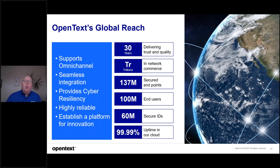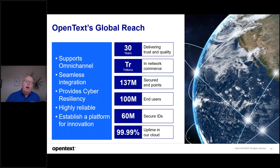For the past 30 years, OpenText has partnered with companies around the goal of helping them grow and execute on their omnichannel journey. We've been delivering trust and quality, and we support omnichannel growth around the globe. Wherever you want to sell your product, OpenText will support your worldwide growth. Our solution and network moves trillions of dollars in commerce. We have 137 million secure endpoints, 100 million end users, and most importantly, high reliability — this is the foundation of everything we do.